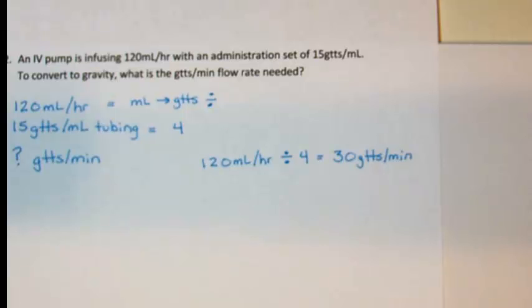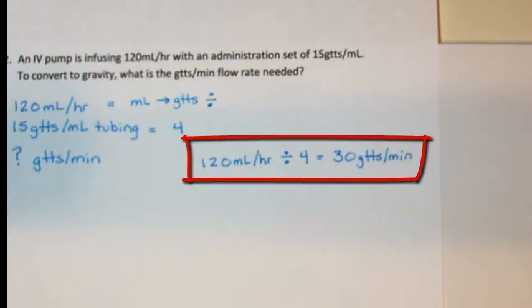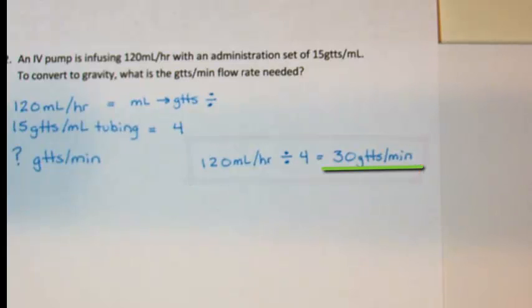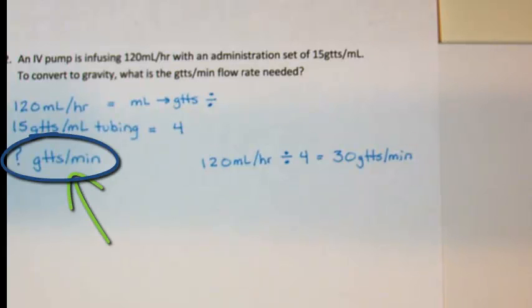To complete this question, we know when converting from milliliters per minute that division is what is used. Our magic number based on 15 drops and 15 going into 64 times is 4. Our setup is 120 milliliters per hour divided by a magic number of 4 equals 30 drops per minute. A quick glance to verify this is what our question was asking confirms we have the proper answer.